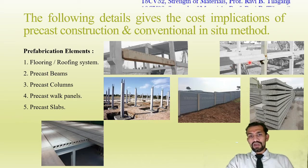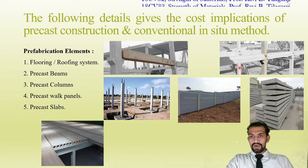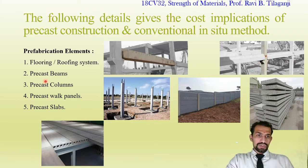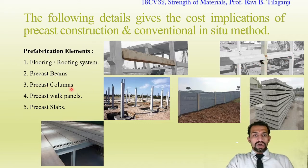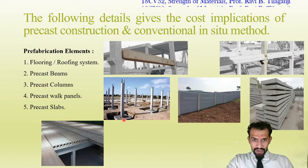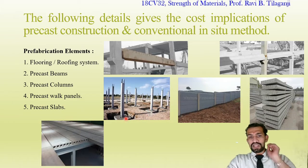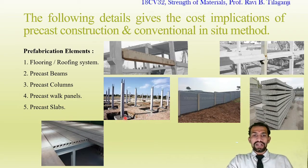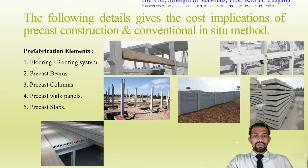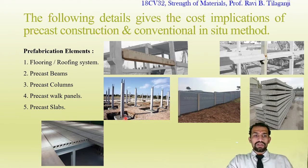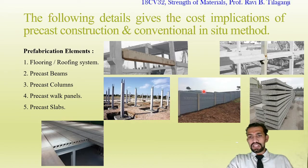In this figure, precast beams resting on columns providing support are visible. For precast columns, the footing and column joints are made with gusset base plates, which can be seen at the end sections. The footing is placed and the column is erected, then joined together with steel connections and filled with filler material.